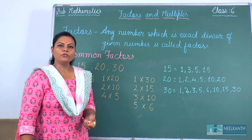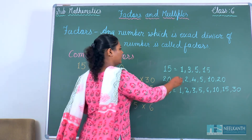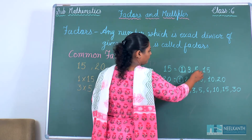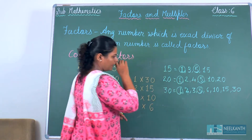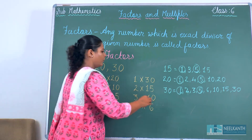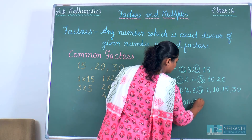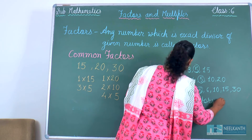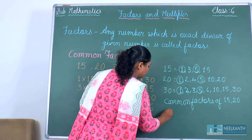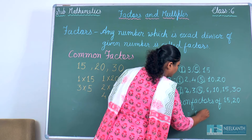Now we have to check which numbers are the same in all three factor lists. Here 1 and 5 are common. So common factors of 15, 20 and 30 = 1 and 5.